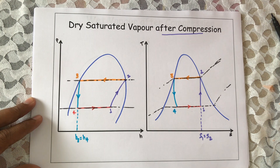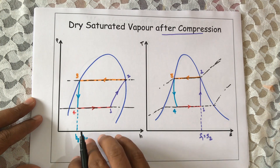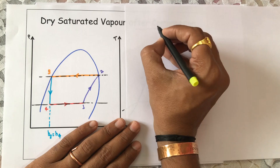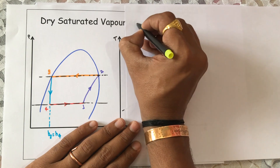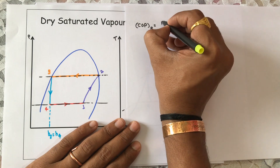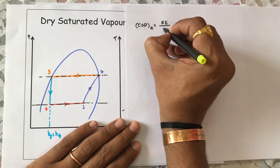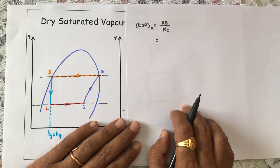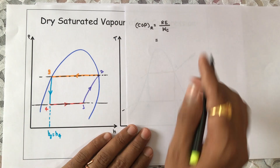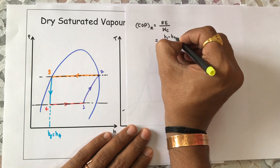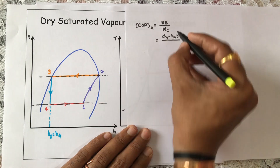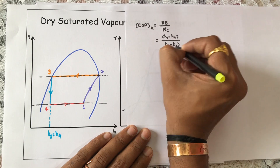Let us do the analysis for dry saturated vapor after compression. The coefficient of performance of the refrigerator, or energy performance ratio, equals the refrigeration effect produced divided by the compressor work. After simplification: COP = (h1 − h4) / (h2 − h1), where h2 − h1 is the work during process 1 to 2.